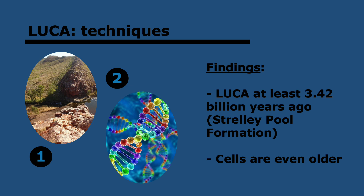How have things been found about LUCA? There are two main techniques. One is paleontology — the study of fossils — which has proved that LUCA must be at least 3.42 billion years old. Earth is only 4.5 billion years old, which means LUCA must have emerged about a billion years into Earth's existence. It's also believed that cells are even older than LUCA. Since some organisms may have gone extinct before LUCA, cells are older than LUCA but it is not known exactly how old.